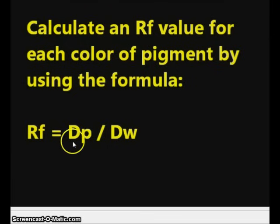That's because the distance traveled by the pigment would be the same as the distance traveled by the water. If we had a pigment color which travels half the distance of the water, the RF value for that pigment would be 0.5.